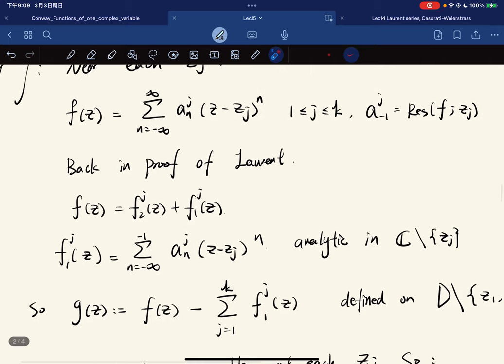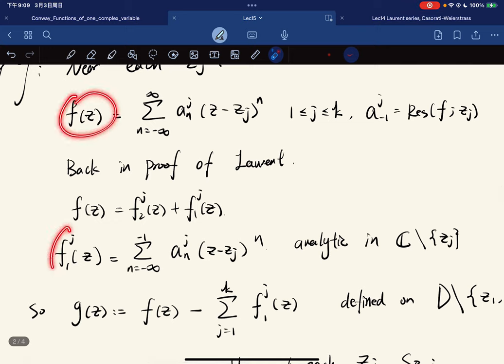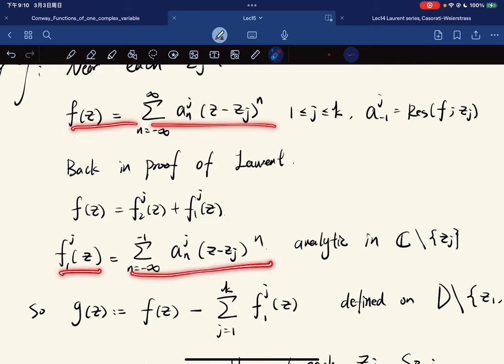So if we subtract, do the subtraction, right? For example, z1, right? We have fz, we subtract f1z. Then a negative vanishes from zero to infinity.